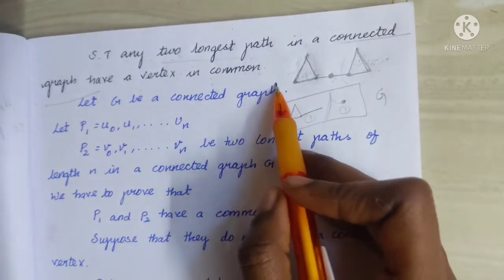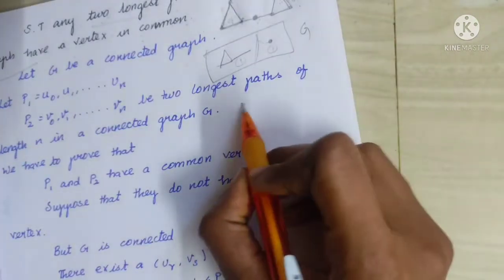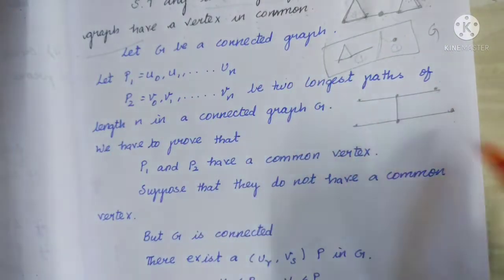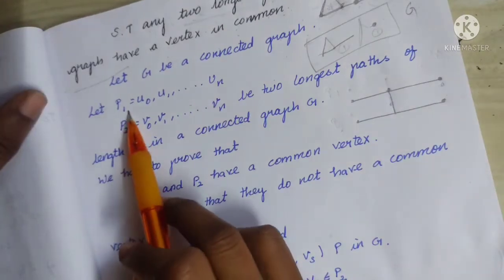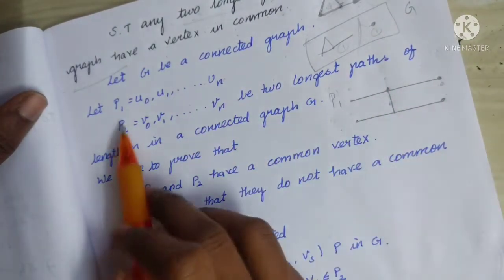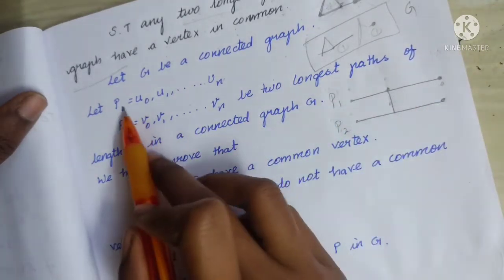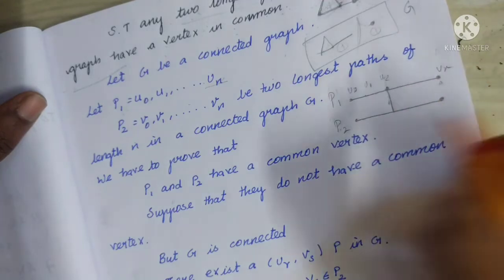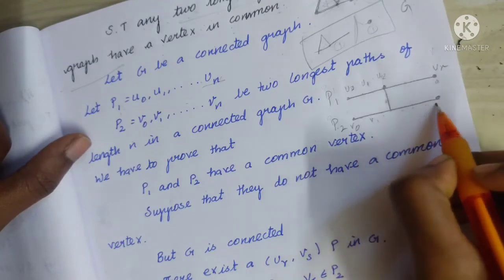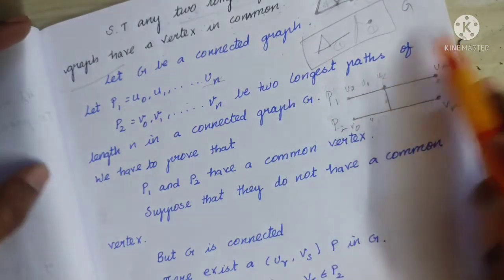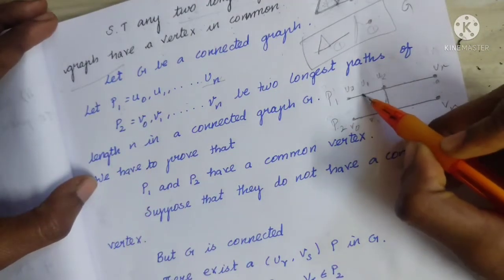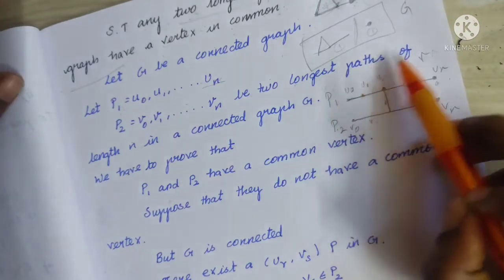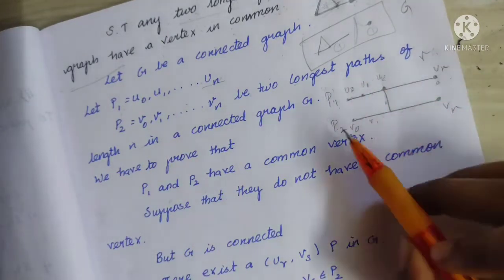We will prove it. Let G be a connected graph. Let P1 equal U0, U1, up to Un. This path is named P1. Then P2 is named P2. P1 is U0 up to Un — so P1 has vertices U0, U1, U2 up to Un. Then P2 is V0, V1 up to Vn vertices. These are the two longest paths of length n. So P1 has length n and P2 has length n. Length is the number of edges.